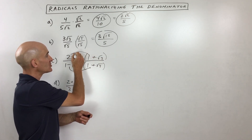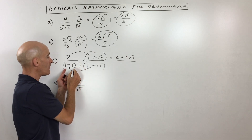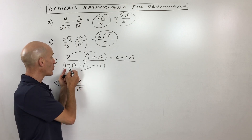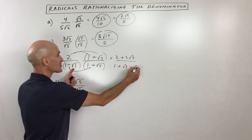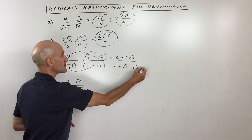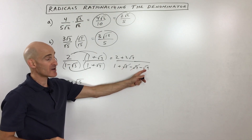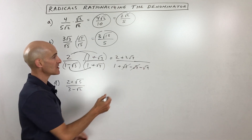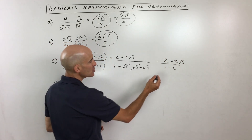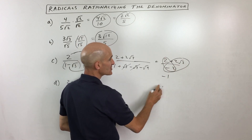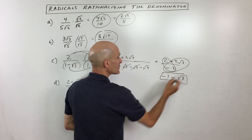What we're going to do is distribute the two. Two times one is two; two times the square root of three gives us two square root of three. In the denominator, we have a binomial times a binomial, so we'll FOIL — or use the distributive property twice. One times one is one; one times square root of three is square root of three; negative square root of three times one is negative square root of three; and negative square root of three times positive square root of three is negative square root of nine. The square root of three and negative square root of three cancel. Square root of nine is three; times negative gives negative three, so one minus three is negative two. In the numerator we have two plus two square root of three. We can split this into two fractions: two divided by negative two is negative one, and two root three divided by negative two is negative root three. So it simplifies to negative one minus square root of three.